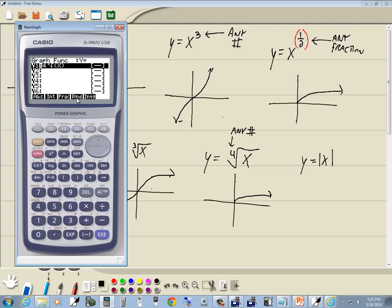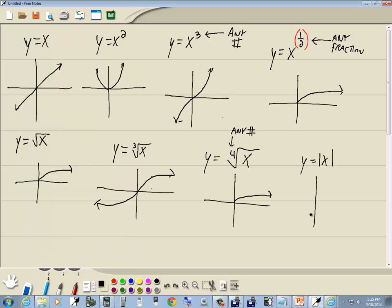Absolute, INT, frac, random, integer. Absolute value is the one we want. So, we'll choose F1, since that's right below it. And, as always, we'll put your beginning parentheses in. And then your X key. And then your closing parentheses. And then EXE. Then if we choose F6 for draw, that gives us our absolute value.